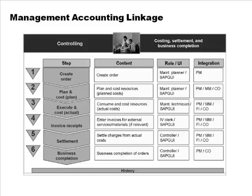You can plan costs by cost element or by activity-based costing. When you execute the maintenance order, you're consuming resources — material and work center capacities — so you record all of those. At the end you can see the total cost. When you buy goods or materials, you receive invoices, and when you pay those invoices they are all assigned to the maintenance order.